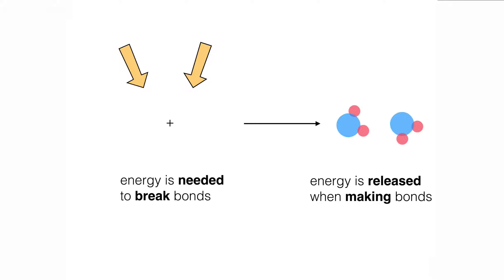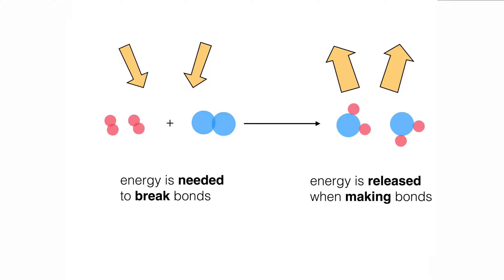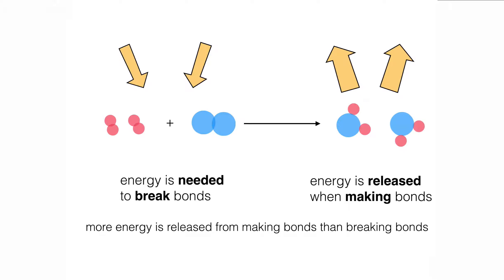As those bonds are made in the water molecules, energy is released. And you can see from the size of the arrows that we have, in this case, more energy released when making bonds compared to the energy needed to break the bonds. So in this case, we have what's called an exothermic reaction. This reaction is exothermic because more energy is released from making the bonds than breaking the bonds.